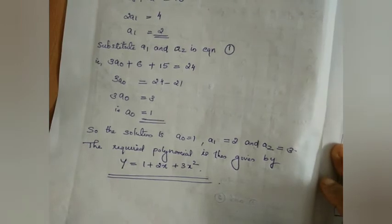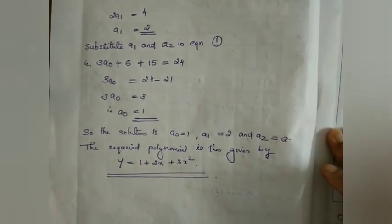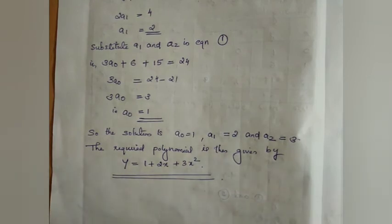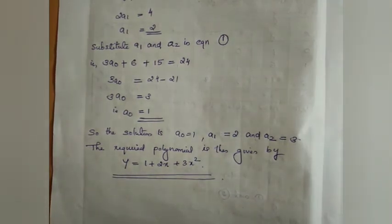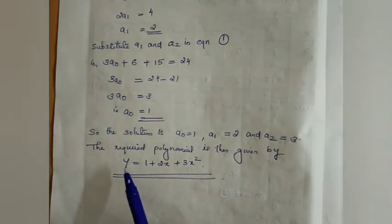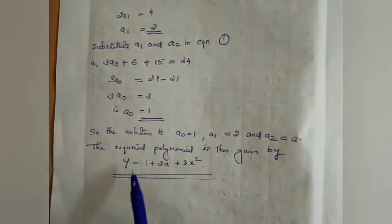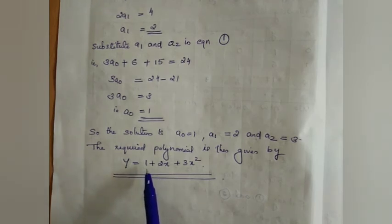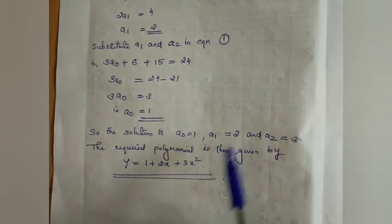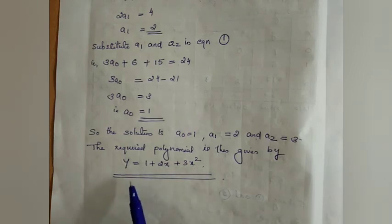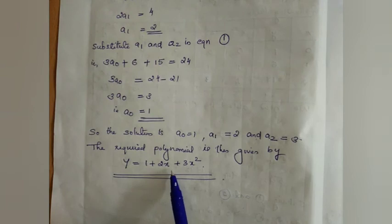Substituting into equation 1, we get a0 = 1. Therefore a0 = 1, a1 = 2, a2 = 3. The required second degree polynomial is y = a0 + a1x + a2x squared, which gives y = 1 + 2x + 3x squared.